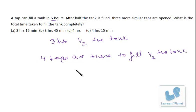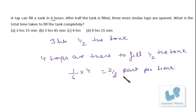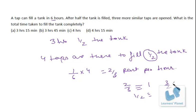One pipe fills 1/6 part of the tank per hour, so 4 taps will fill 4/6 that is 2/3 part per hour. We have to fill only half of the tank. Since 2/3 of the tank is being filled in 1 hour, half the tank will take 3/4 hours, that is 45 minutes. So 3 hours for the first half and 3/4 hours for the remaining half — that means 3 hours and 45 minutes total to fill the tank completely.